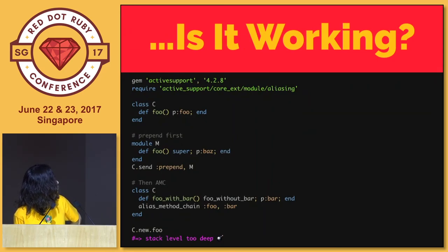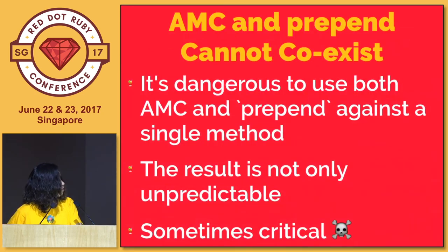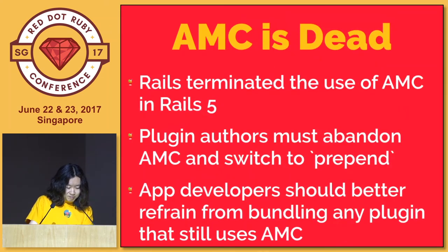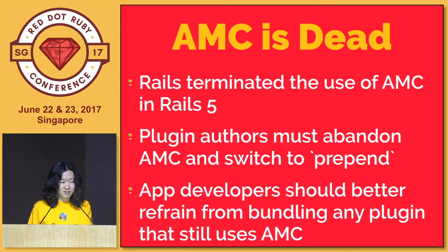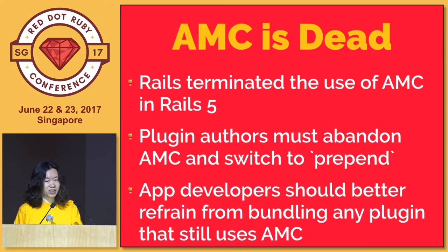But if you put prepend first, then alias_method_chain, it's going to cause an infinite loop. This means alias_method_chain and prepend can never coexist. So alias_method_chain is so dangerous that you're discouraged to use it. Please never use it anymore. Especially if you're a plugin author or library author, please stop using alias_method_chain right now.